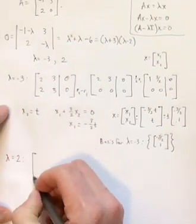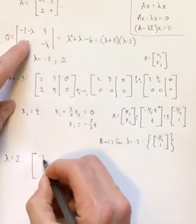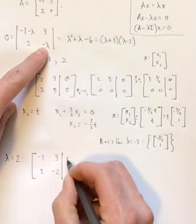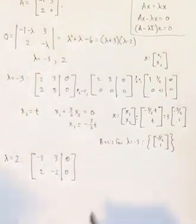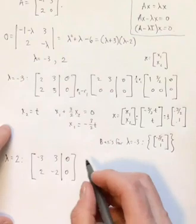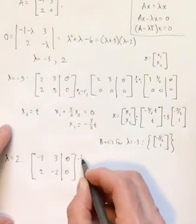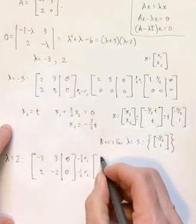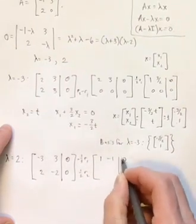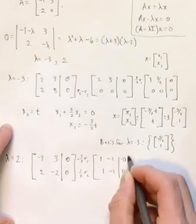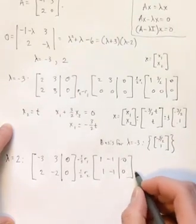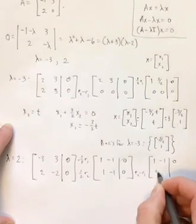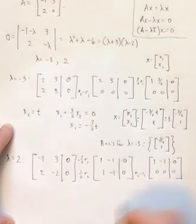If I put 2 in right here, this matrix becomes negative 3, 3, 2, negative 2. It's a homogeneous solution. First thing I'll do is I'll go ahead and do minus one-third of row 1 and one-half of row 2. That's going to make this 1, negative 1, 0, and 1, negative 1, 0. Just like before, row 2 minus row 1 makes this 1, negative 1, 0 on the top and 0s along the bottom.